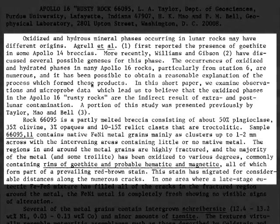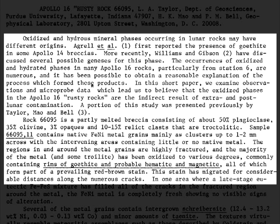Oxidation and hydrous mineral phases occurring in lunar rocks may have different origins. Agrel and his team first reported the presence of goethite in some Apollo 14 breccias. More recently, Williams and Gibson discussed several possible geneses for this phase. The occurrences of oxidized and hydrated phases in many Apollo 16 rocks, particularly from Station 6, are numerous. In this short paper, we examine observations and microprobe data which led us to believe that the oxidized phases in the Apollo 16 Rusty Rocks are the indirect result of extra and post-lunar contamination.